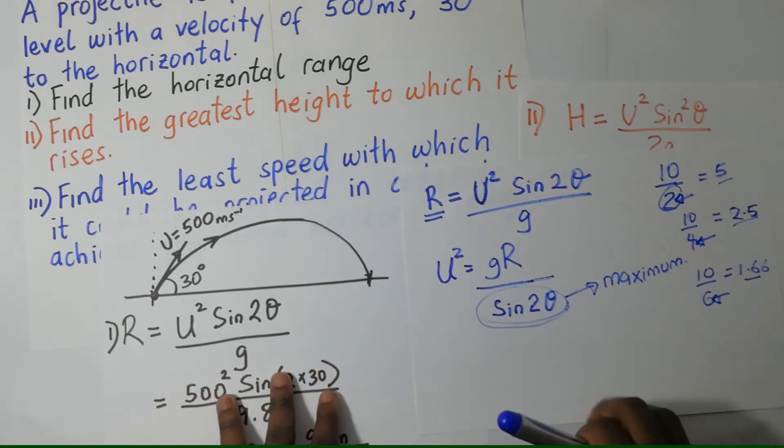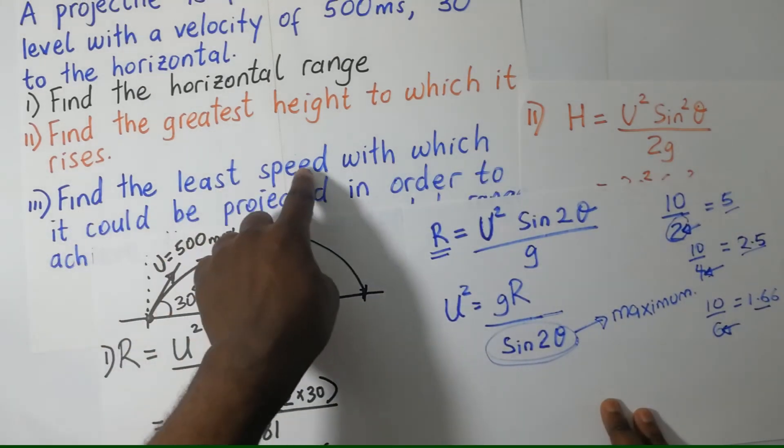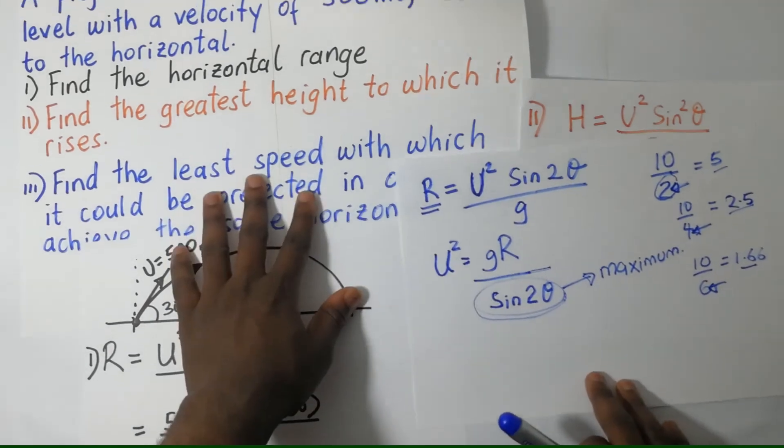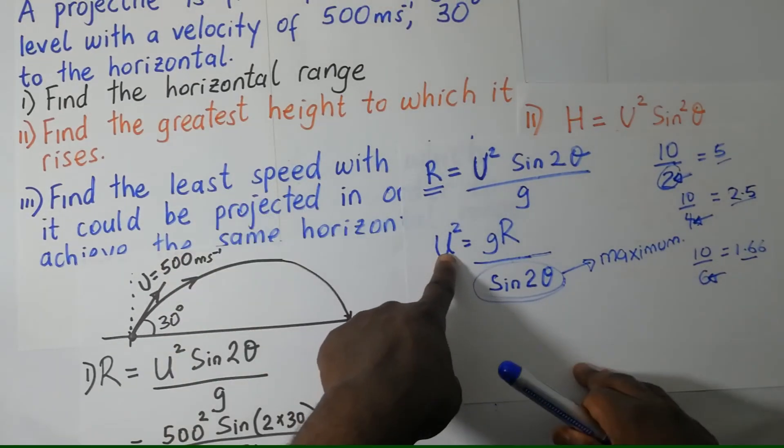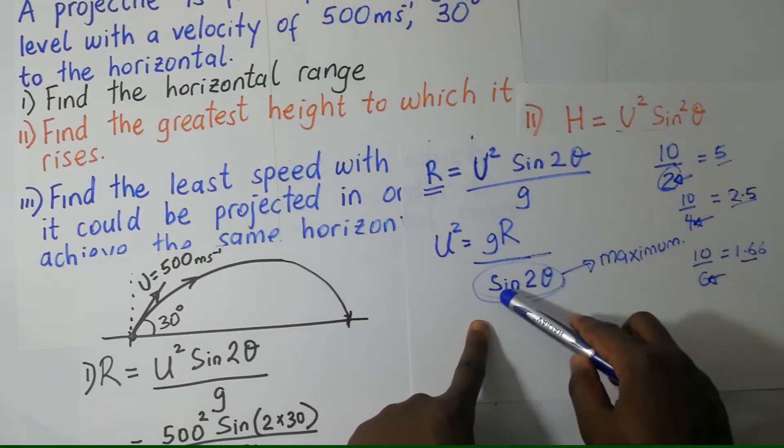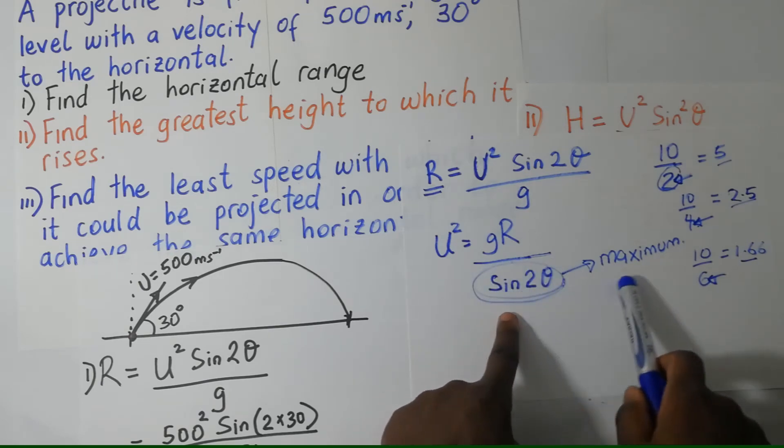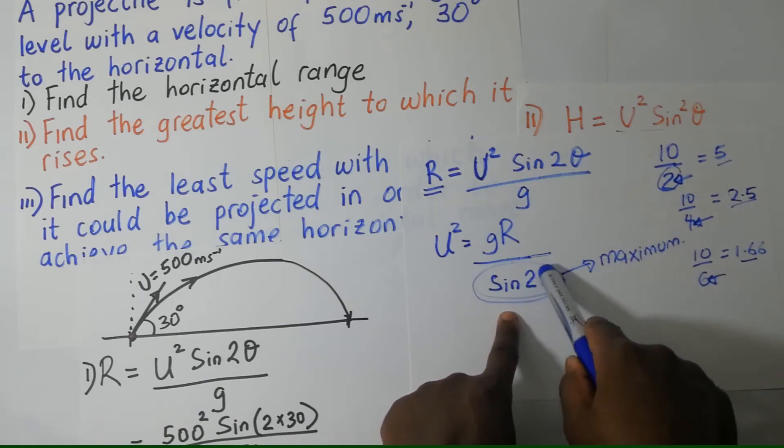So it's the same logic we are using here. If the question says they want us to find the least speed, if I am to get the least value of U here, it means as far as this expression is concerned, my denominator has to be at its maximum, the biggest possible value.